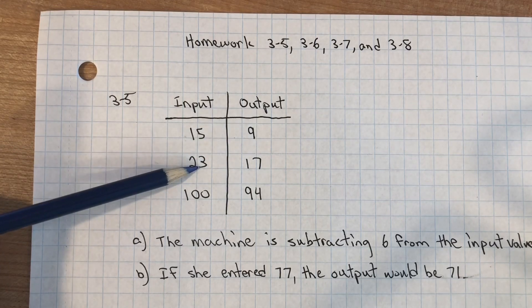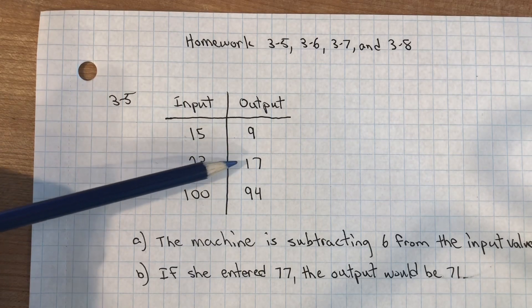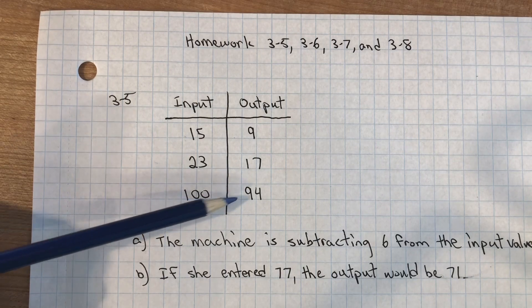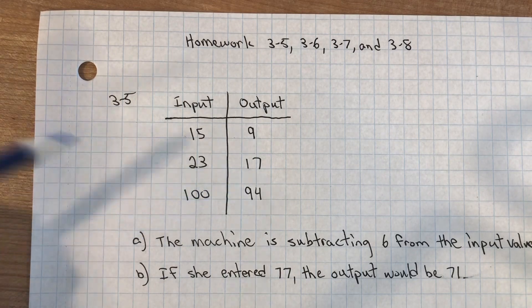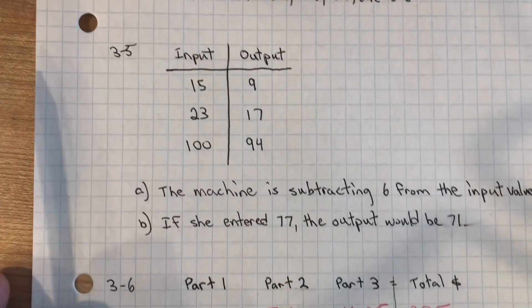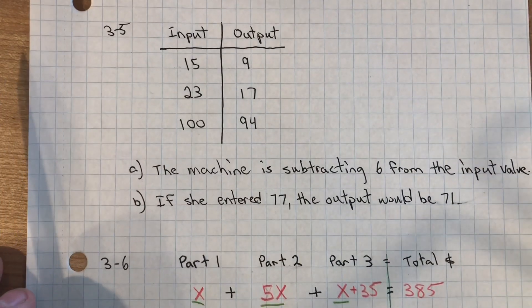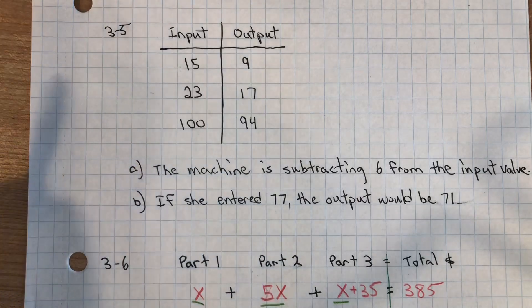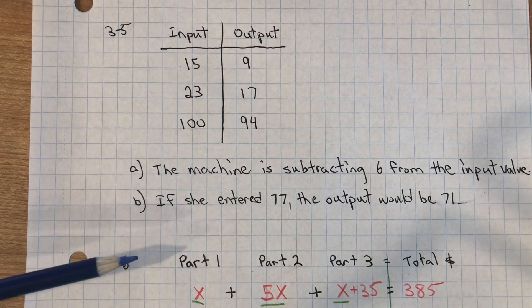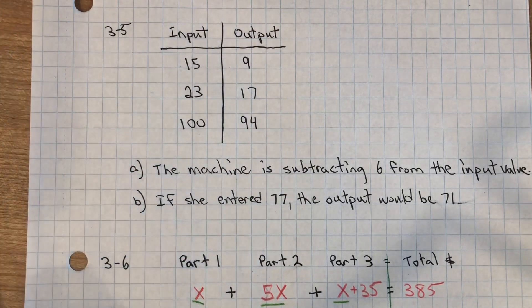23 minus 6 is 17. 100 minus 6 is 94. If she entered 77 into the machine, the output would be 71.